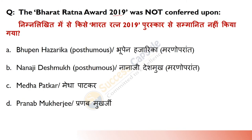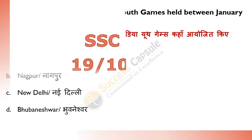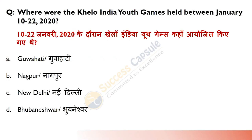The Bharat Ratna Award 2019 was not conferred upon whom? Answer is C — Medha Patkar. Baaki tino ko award diya gaya tha — former President Pranab Mukherjee, Bhupen Hazarika who was a famous singer and composer, and Nanaji Deshmukh who was a social activist.